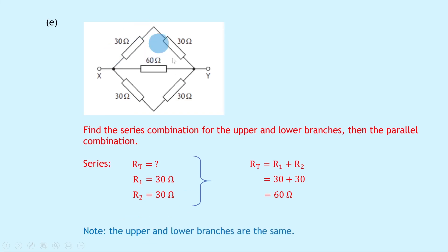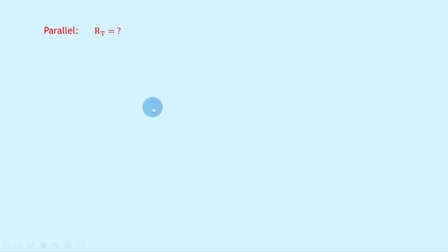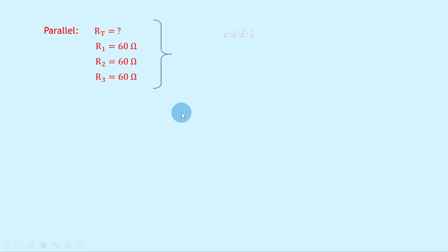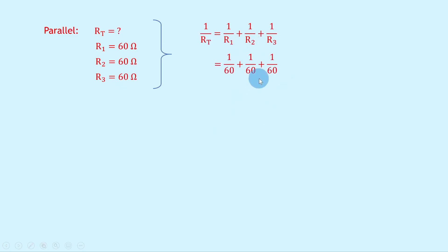The upper and lower branches are the same, so we can resolve the circuit into three parallel resistors: R1 is 60 ohms, R2 is 60 ohms, and R3 is 60 ohms. Writing down our equation: 1 over RT equals 1 over 60 plus 1 over 60 plus 1 over 60, which simplifies to 3 over 60. Flipping both sides gives RT equals 60 over 3, and that gives a final answer of 20 ohms.